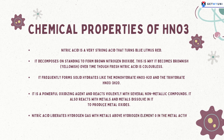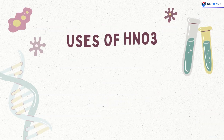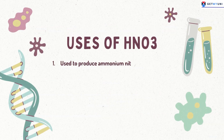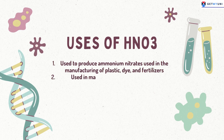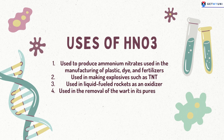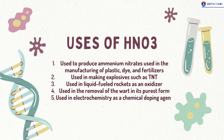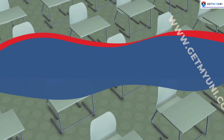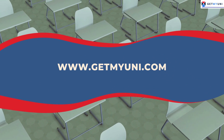Here are some uses of nitric acid: it is used to produce ammonium nitrates used in the manufacturing of plastics, dyes, and fertilizers. It is used in making explosives such as TNT. HNO₃ is used in liquid-fueled rockets as an oxidizer. It is used in the removal of warts in its purest form, and it is also used in electrochemistry as a chemical doping agent.